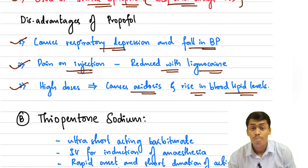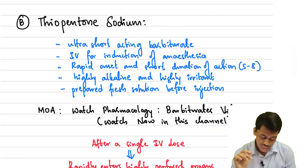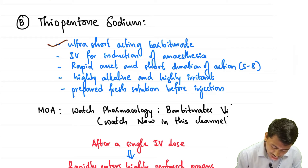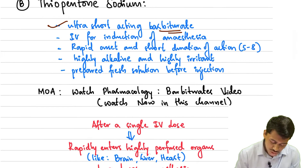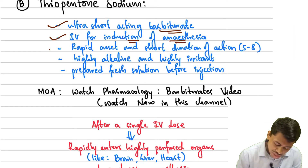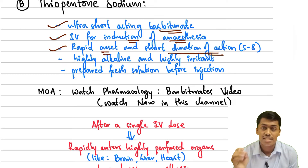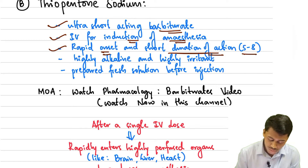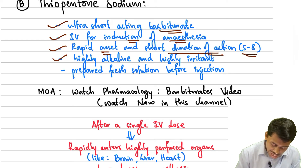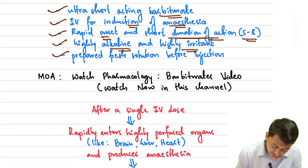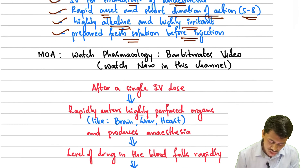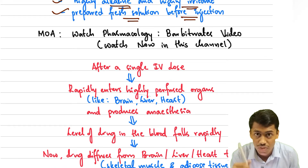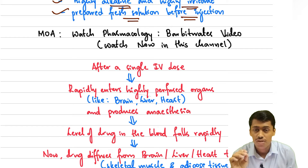Moving on to the next drug, thiopentone sodium. It is an ultra-short-acting barbiturate that can be given IV for the induction of anesthesia. It has a rapid onset and a short duration of action — generally 5 to 8 minutes. Thiopentone sodium is highly alkaline and highly irritant, and a fresh solution must be prepared before injection. For the mechanism of action, make sure to watch the barbiturates video, as the mechanism is very important.